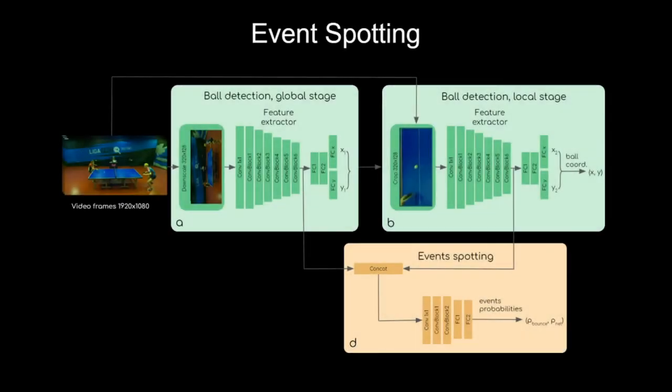The last task of the multitask approach is event spotting. It utilizes concatenated feature maps from both global and local detectors. Such architecture allows gradients to flow through both feature extractors during the joint training process.